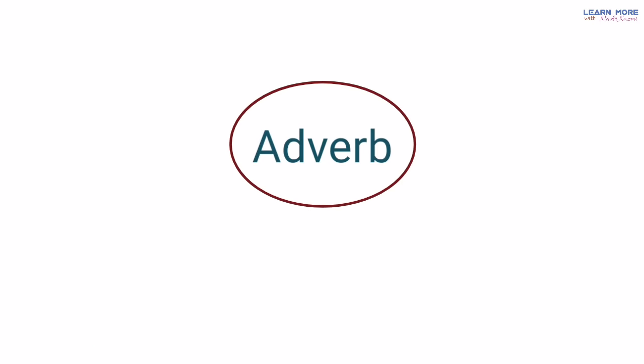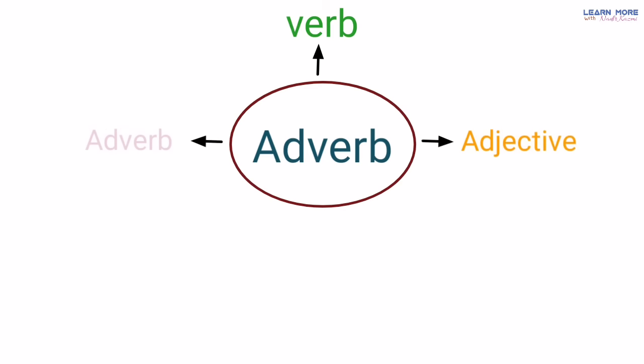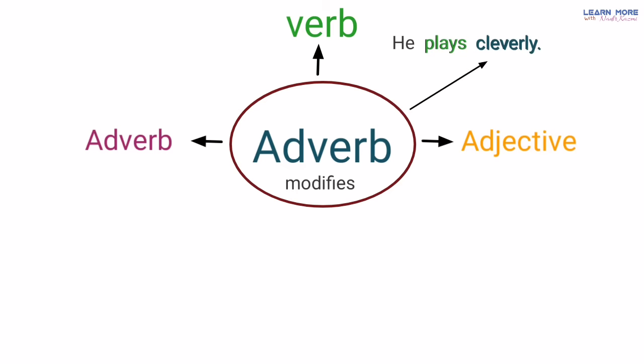Adverb ko define karte huye humne padha tha ke adverbs aisi alfaz hote hain jo kisi verb, adjective ya kisi aur adverb ko modify karte hain ya describe karte hain. For example: 'He plays cleverly' — woh chalaki se khailta hai. Ab 'cleverly' ek adverb hai kyunki ye us ke kaam jo wo karta hai, yani khailne ka, uske baare mein information de raha hai — he plays, woh khailta hai, kis tarah? Cleverly, chalaki se.